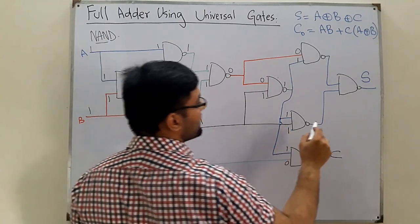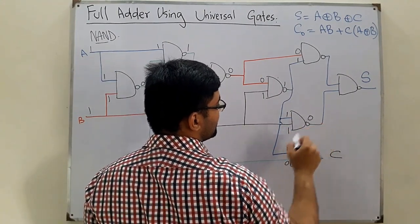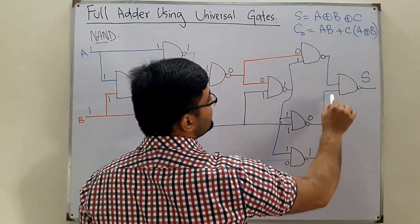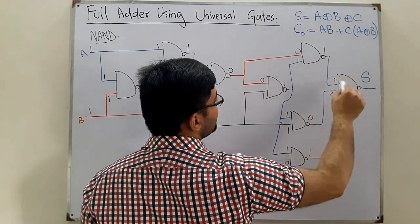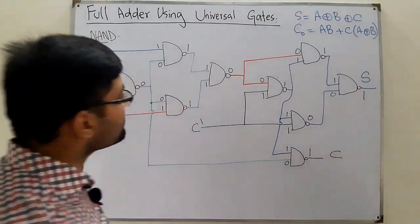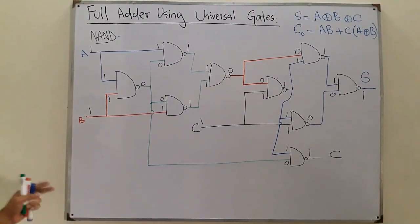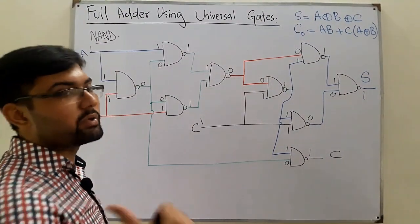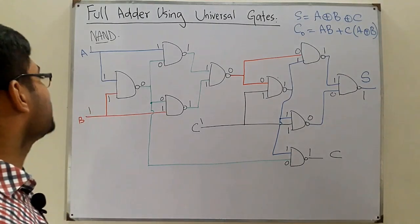1 NAND 1 gives 0. Then 1 NAND 0 gives 1, and 0 NAND 1 gives 1 again. So the sum is 1 and the carry is 1, which is absolutely correct when A=B=C=1, as we know from the truth table.